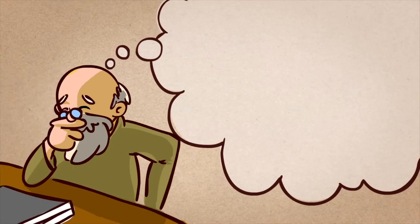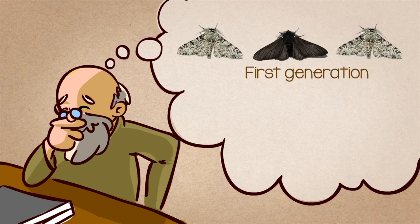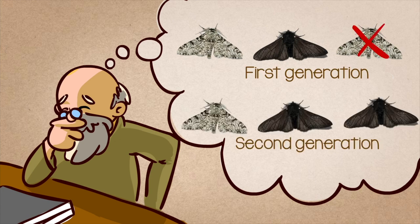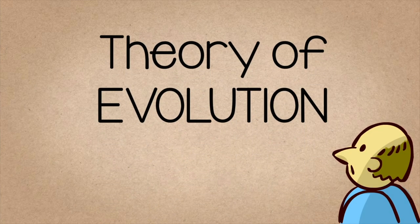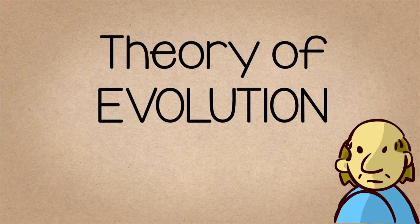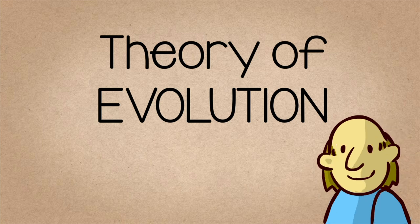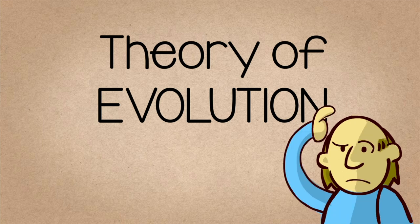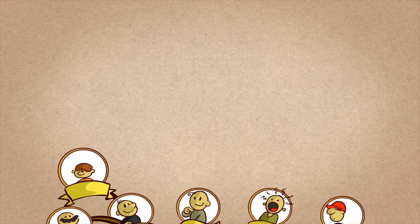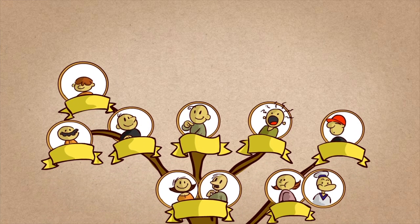Darwin hypothesized that species haven't been the same all the time, but that they have changed. This idea is called the theory of evolution, and everything so far indicates that he was right. And even more, this theory fits all the changes seen in animals, plants, and human beings too.